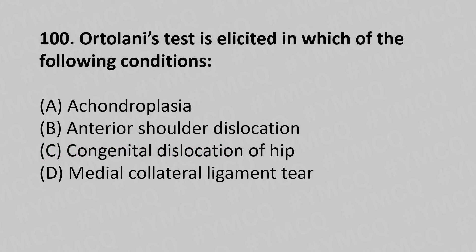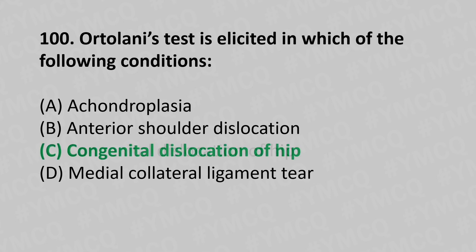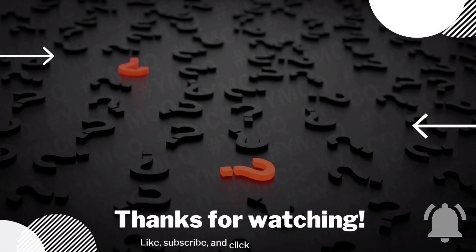Moving to our 100th question. Ortolani's test is elicited in which of the following conditions: option A cerebral palsy, option B anterior shoulder dislocation, option C congenital dislocation of the hip, option D medial collateral ligament injury. The answer is option C, congenital dislocation of the hip. That's the end of this series.